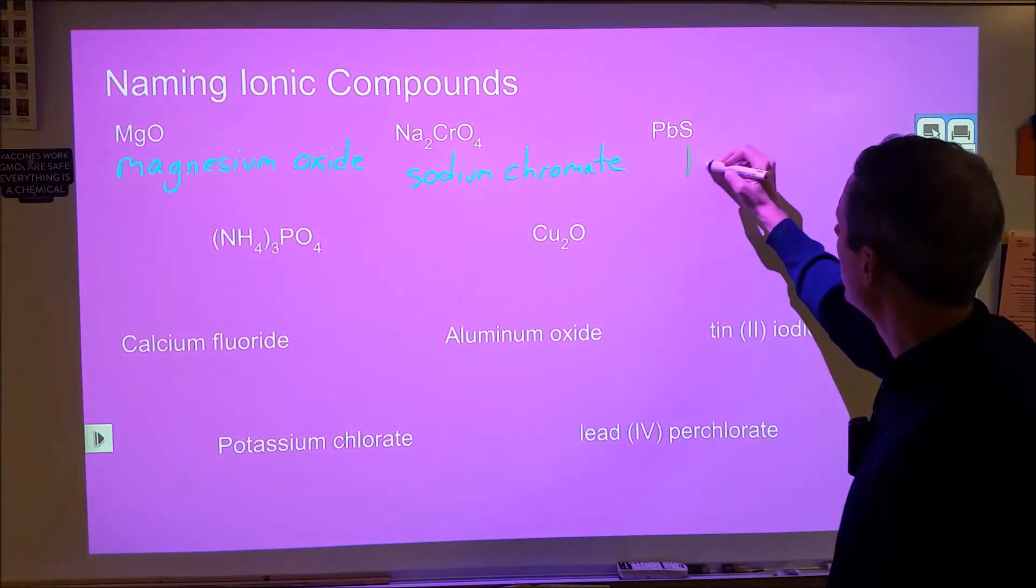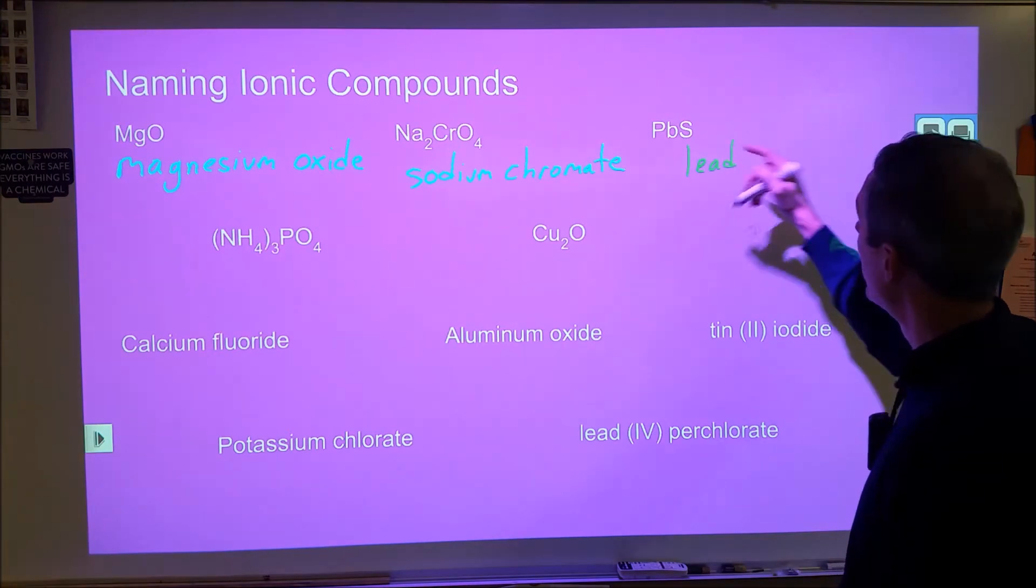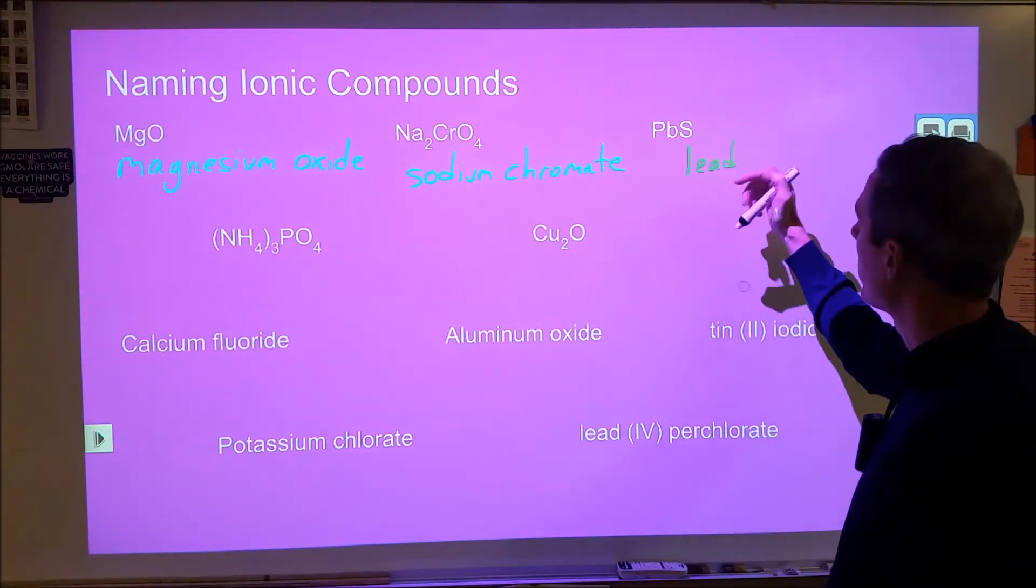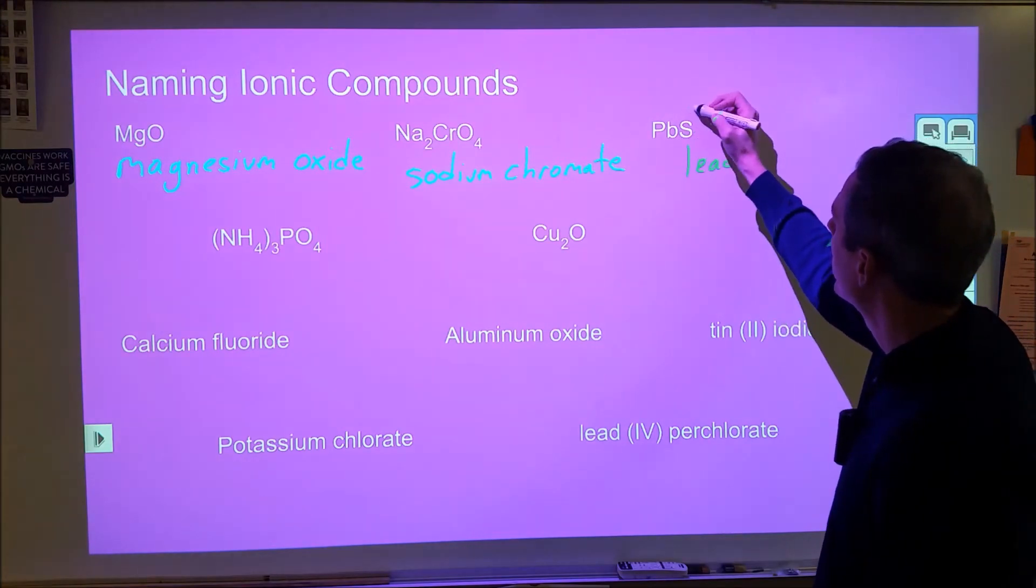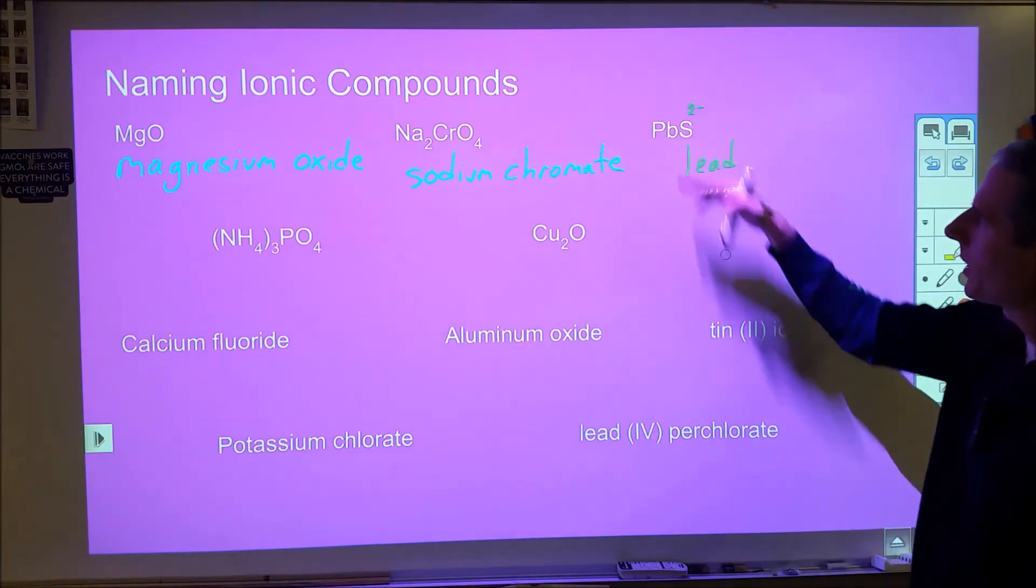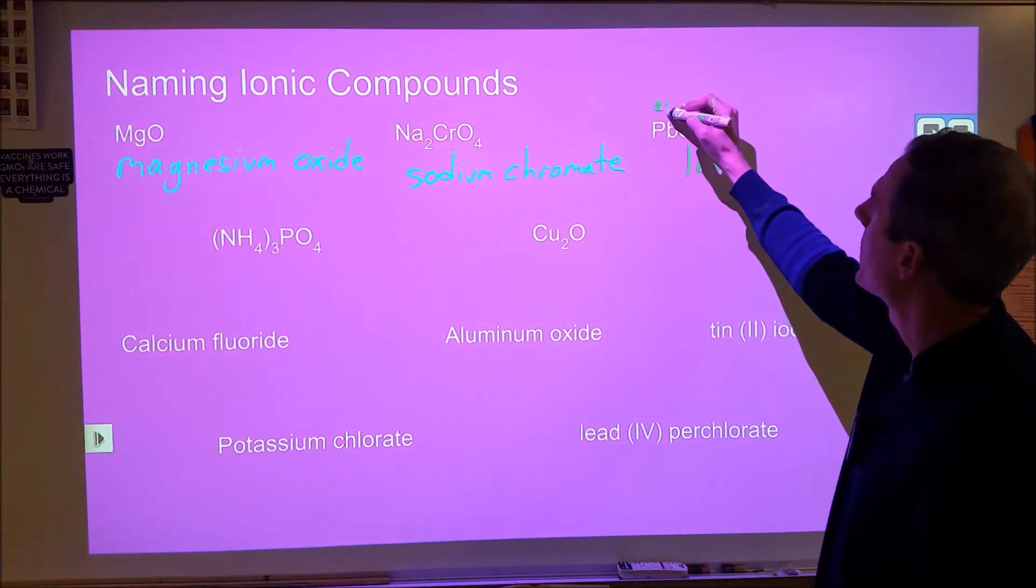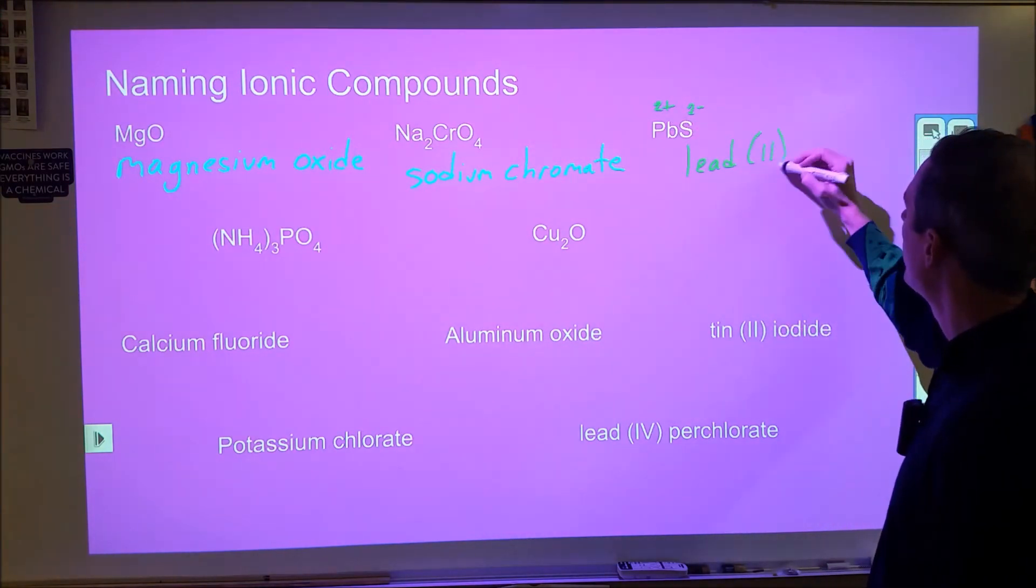And then this next one here we have lead and sulfide but lead is something that has multiple possible charges. Lead can be 2+ or 4+. So in this case we need to look at what the charge of the sulfide is. From the periodic table we get that's 2- charge and the lead therefore must be 2+ charged so we're going to put lead two sulfide.